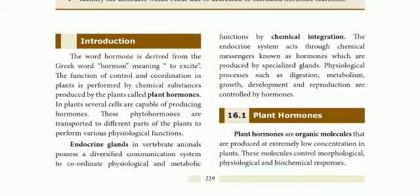The hormone is secreted by endocrine glands. For example, the pituitary gland — the pituitary gland is located on the brain, specifically near the midbrain.